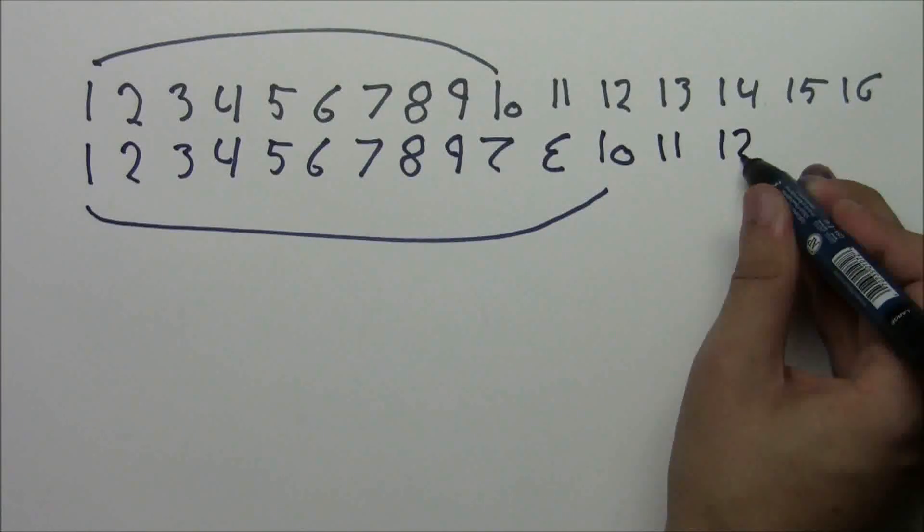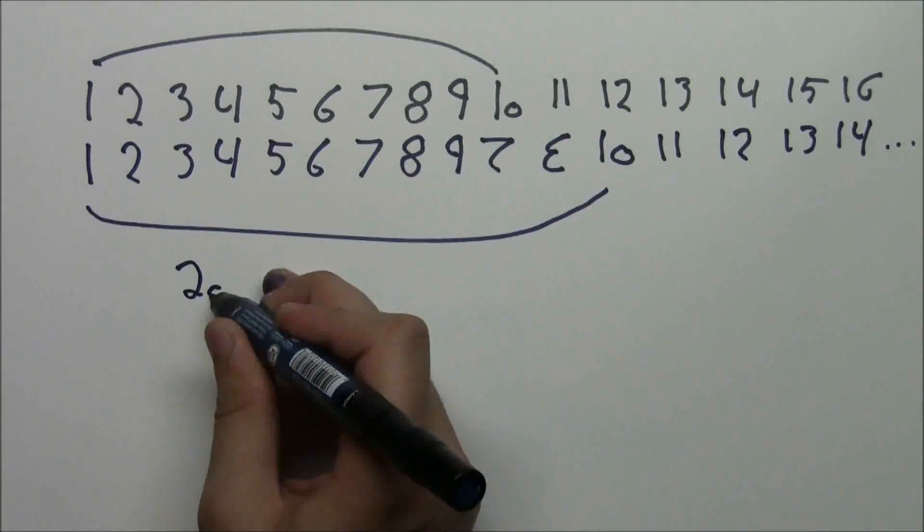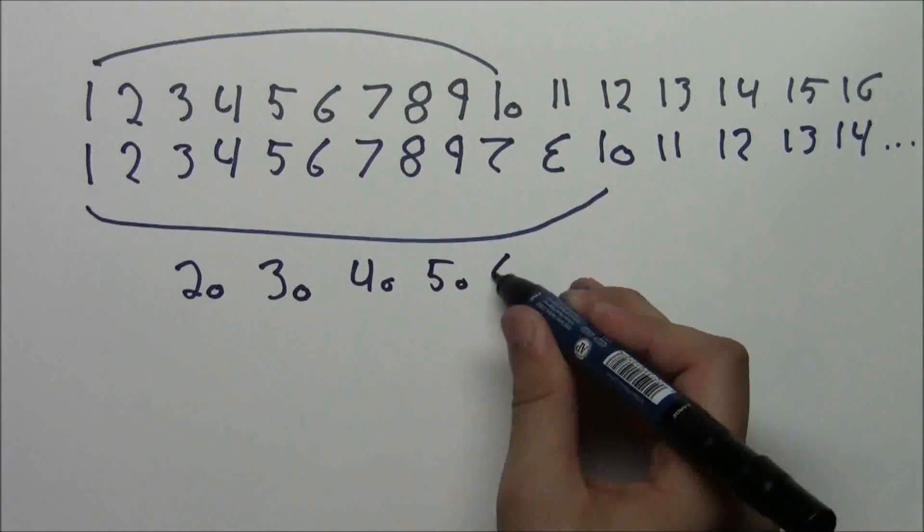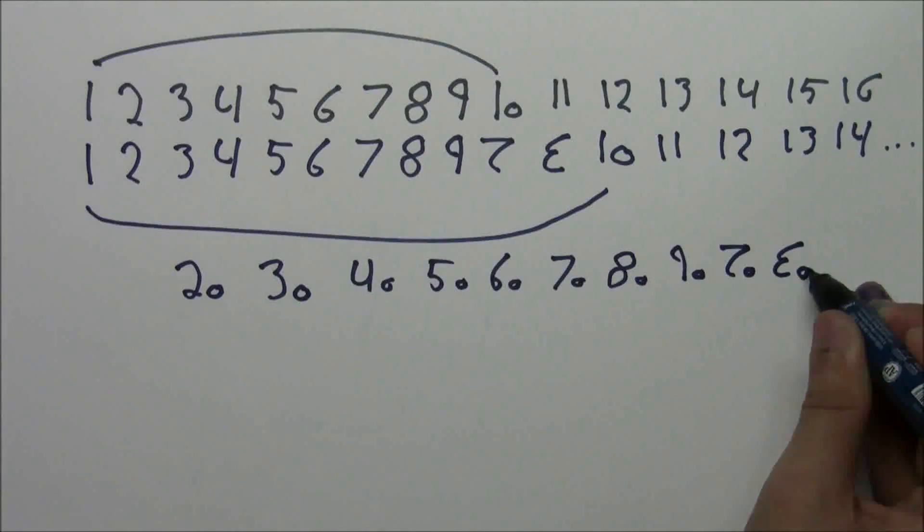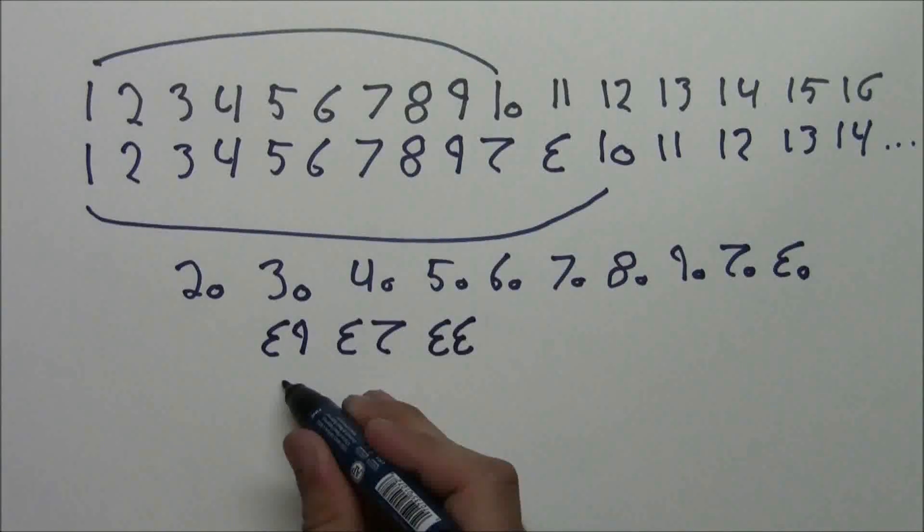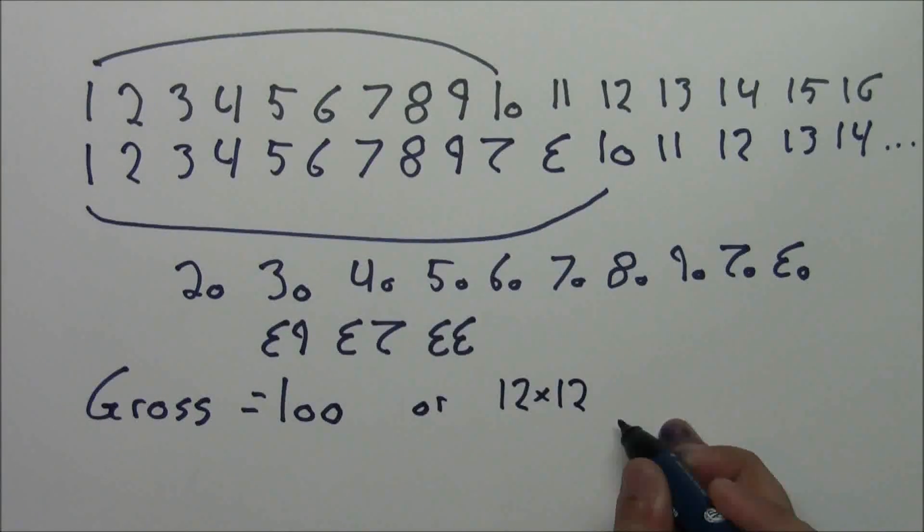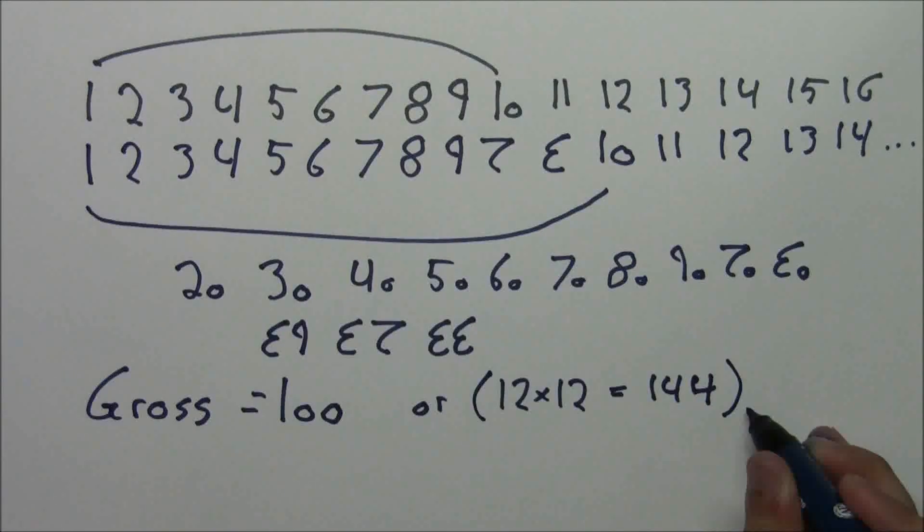And then we keep going. We have 1 do 1, 1 do 2, 1 do 3, all the way up to 2 do, 3 do, 4 do, 5 do, and then all the way up to L do 9, L do deck, L do L, and then we get a gross, or grow, or 12 12s. In decimal, this equals 144.